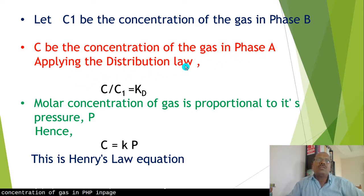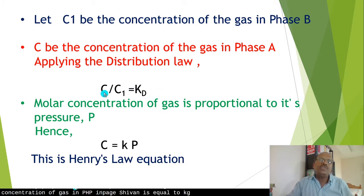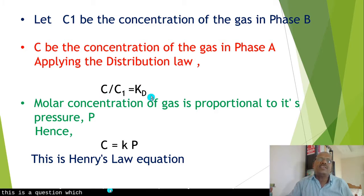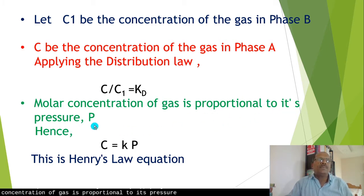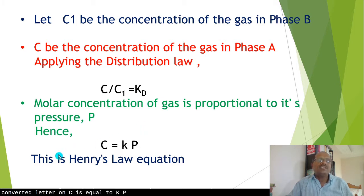Applying the distribution law, C upon C1 is equal to Kd. Since the molar concentration of gas is proportional to its pressure P, this equation is converted to C = Kd. This is the Henry's law equation.